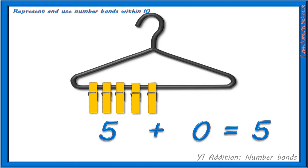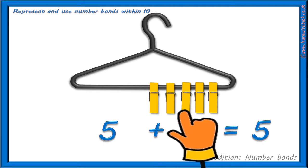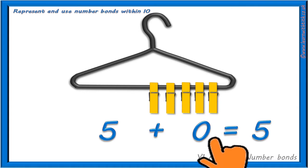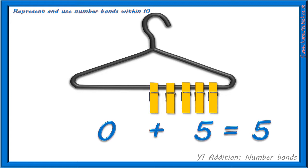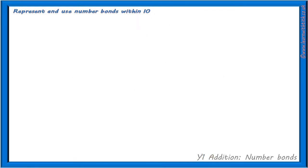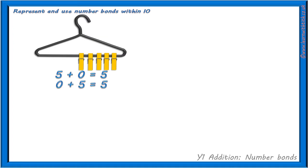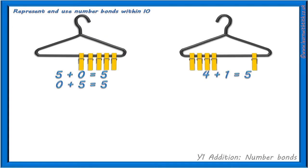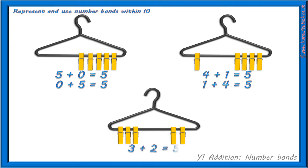And if we turn our coat hanger around again, we have 0 pegs on the left and 1, 2, 3, 4, 5 pegs on the right. So our sum for this could be 0 add 5 equals 5. Working with 5 pegs, we discovered: 5 add 0 equals 5, 0 add 5 equals 5, 4 add 1 equals 5, 1 add 4 equals 5, and 3 add 2 equals 5.